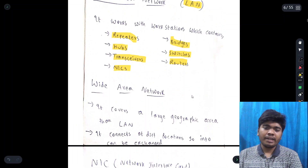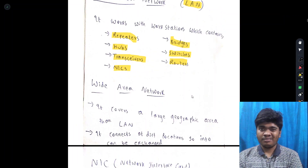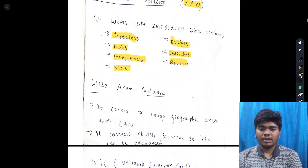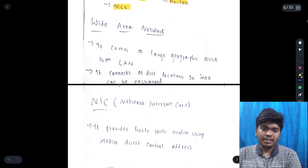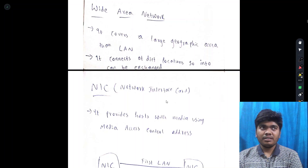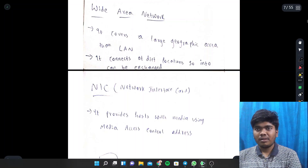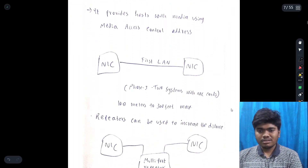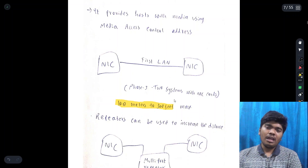Wide Area Network (WAN) is a combination of LANs — it covers a large geographical area and connects different locations so information can be exchanged. NIC — Network Interface Card — is something present in previous generation desktop computers inside the CPU. With the help of NIC, data like MP4, MP3, images, or whatever media can be exchanged. Two systems with NIC cards can connect at a distance of 100 meters to 300 feet maximum.